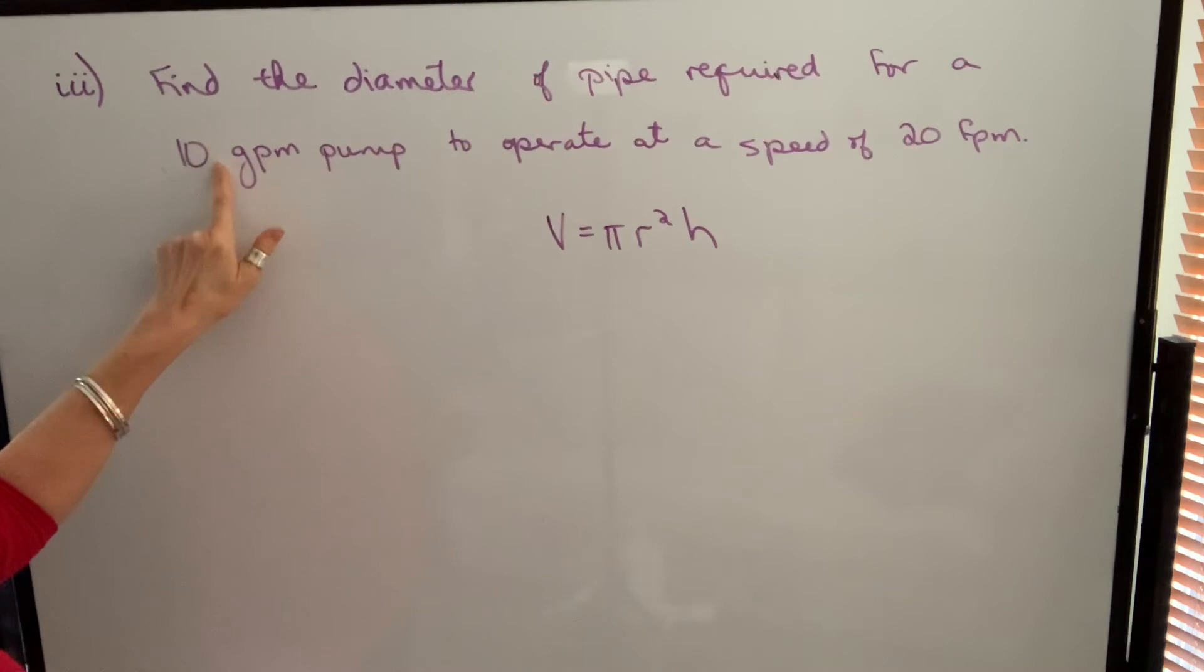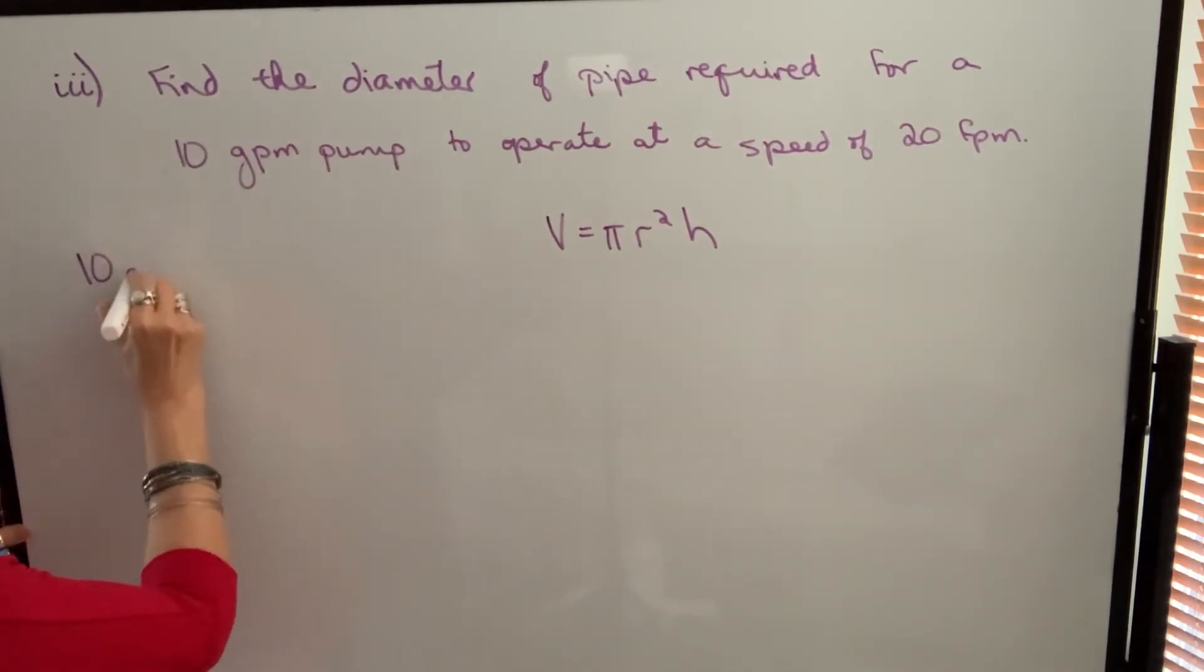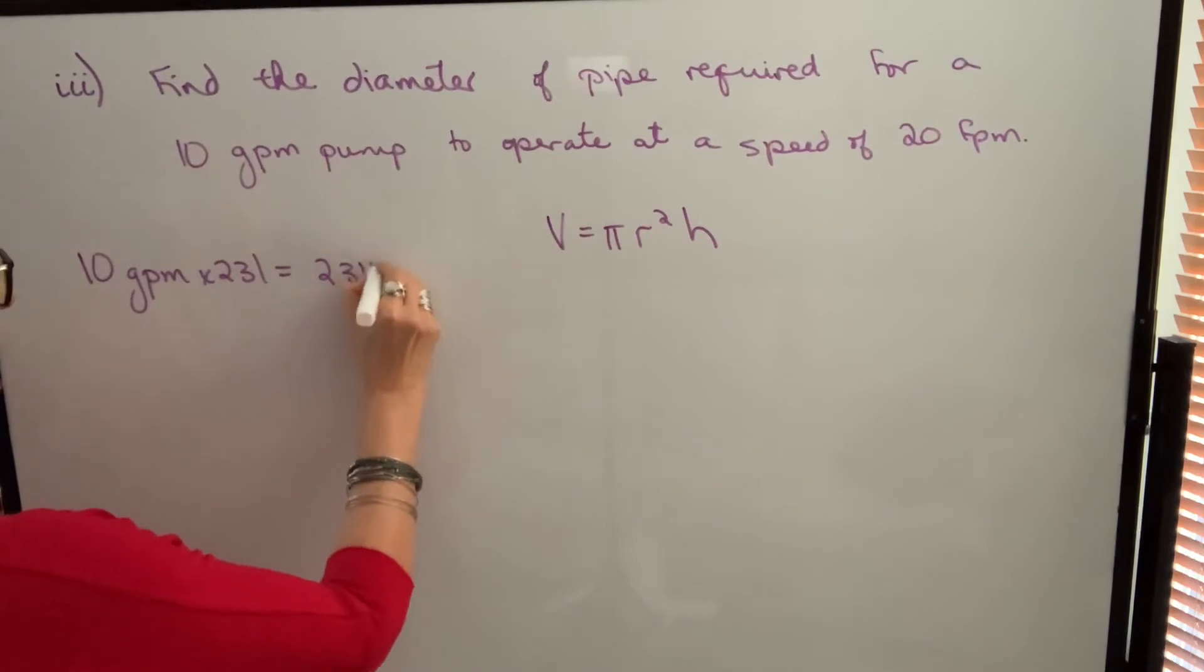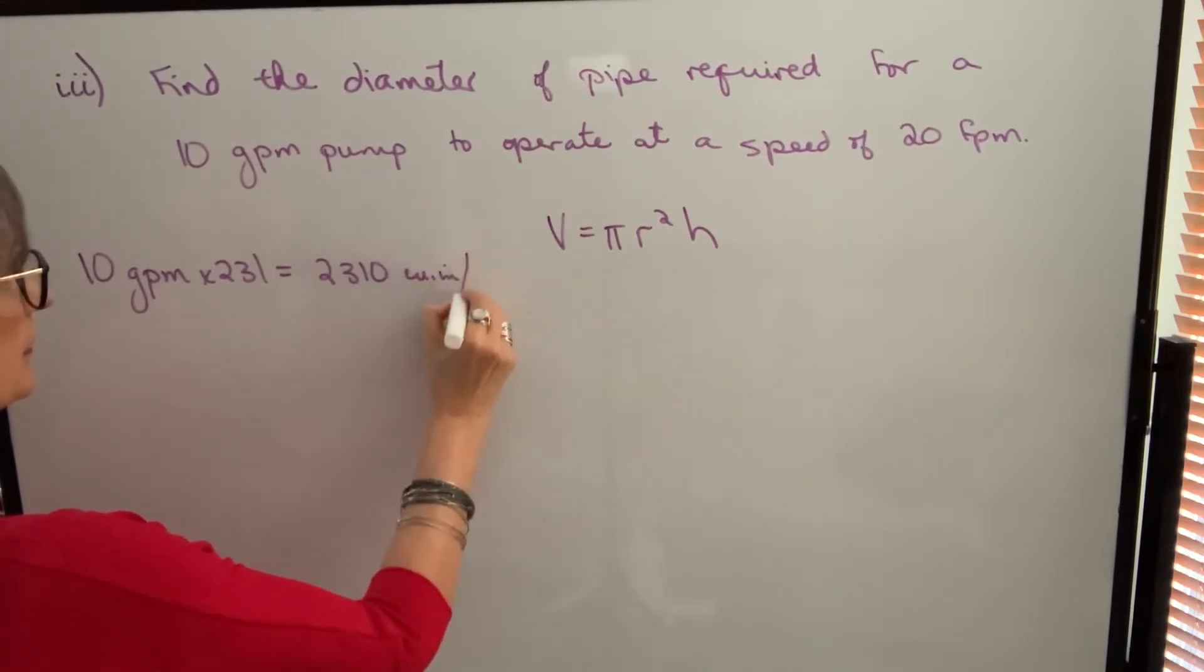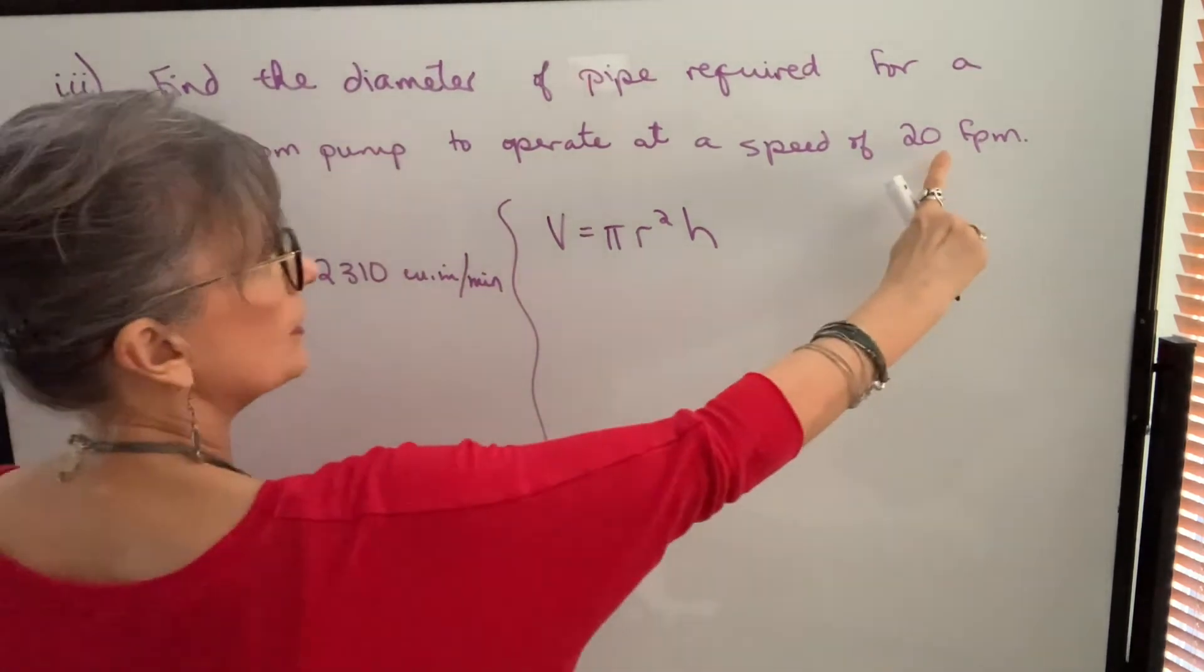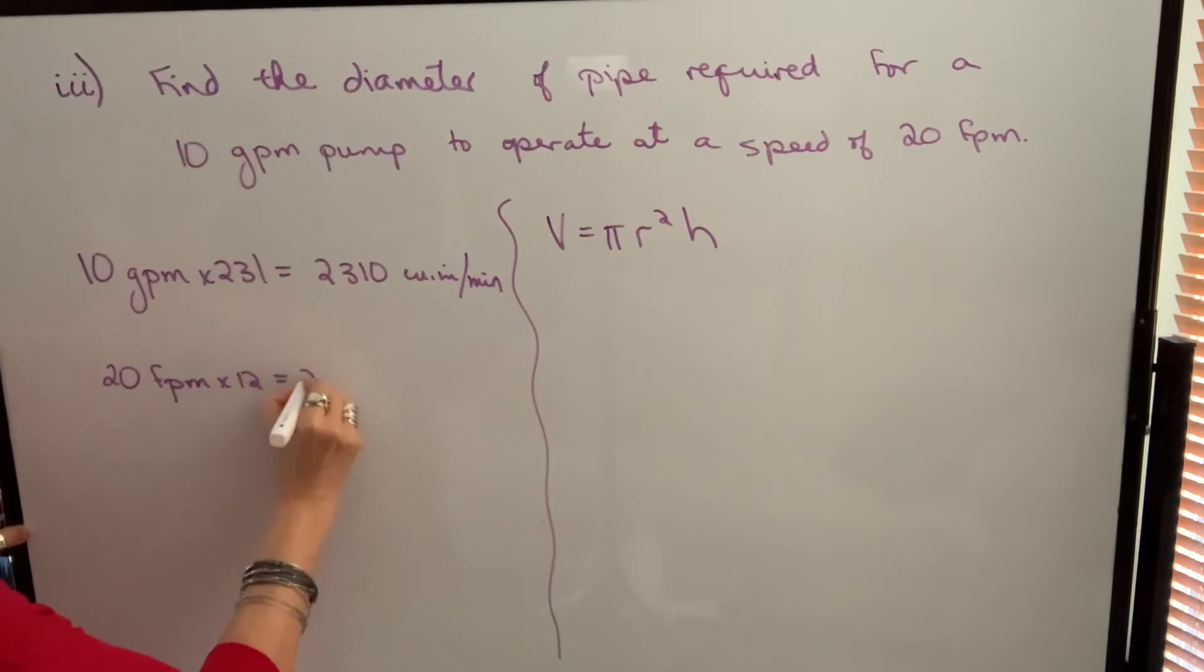So we've got a 10 gallon per minute pump. We're going to change that. Remember, it's all about the units. So 10 gallons per minute, we're going to multiply by 231 and that will give us 2,310 cubic inches per minute. 20 feet per minute would be like the height and we can't work with feet if our other dimensions are in inches. So we're going to multiply by 12 and that will give us 240 inches per minute.